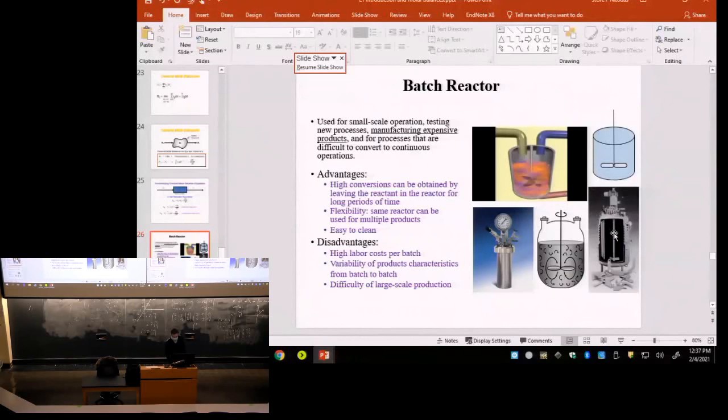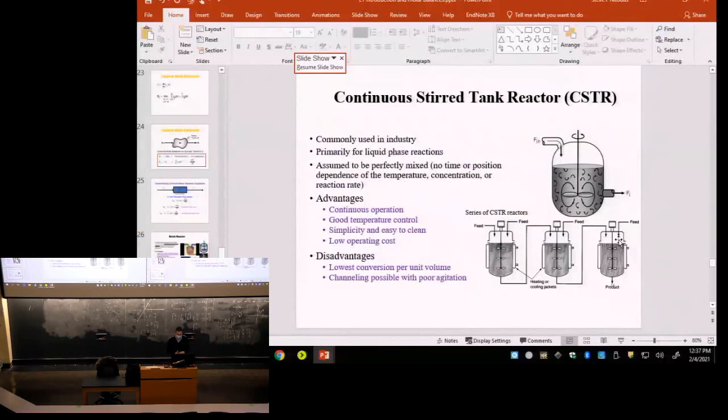And this is a CSTR, the continuous stirred tank reactor, where it's used very often for liquids, liquid reactions. So you introduce your reactants continuously, you have the reaction taking place under continuous agitation, stirring, and then you have the flow out of your products. So this is a continuous process - in and out.